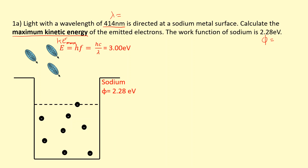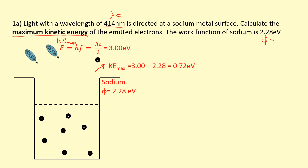That gives us 3 electron volts for each photon. We can see that electrons will be emitted because the one near the surface only requires 2.28 electron volts to escape — that's the one that's going to come out fastest. So when it absorbs 3 electron volts of energy and uses 2.28 to escape, the remainder will be the maximum kinetic energy. So the highest maximum kinetic energy is going to be 0.72 electron volts.